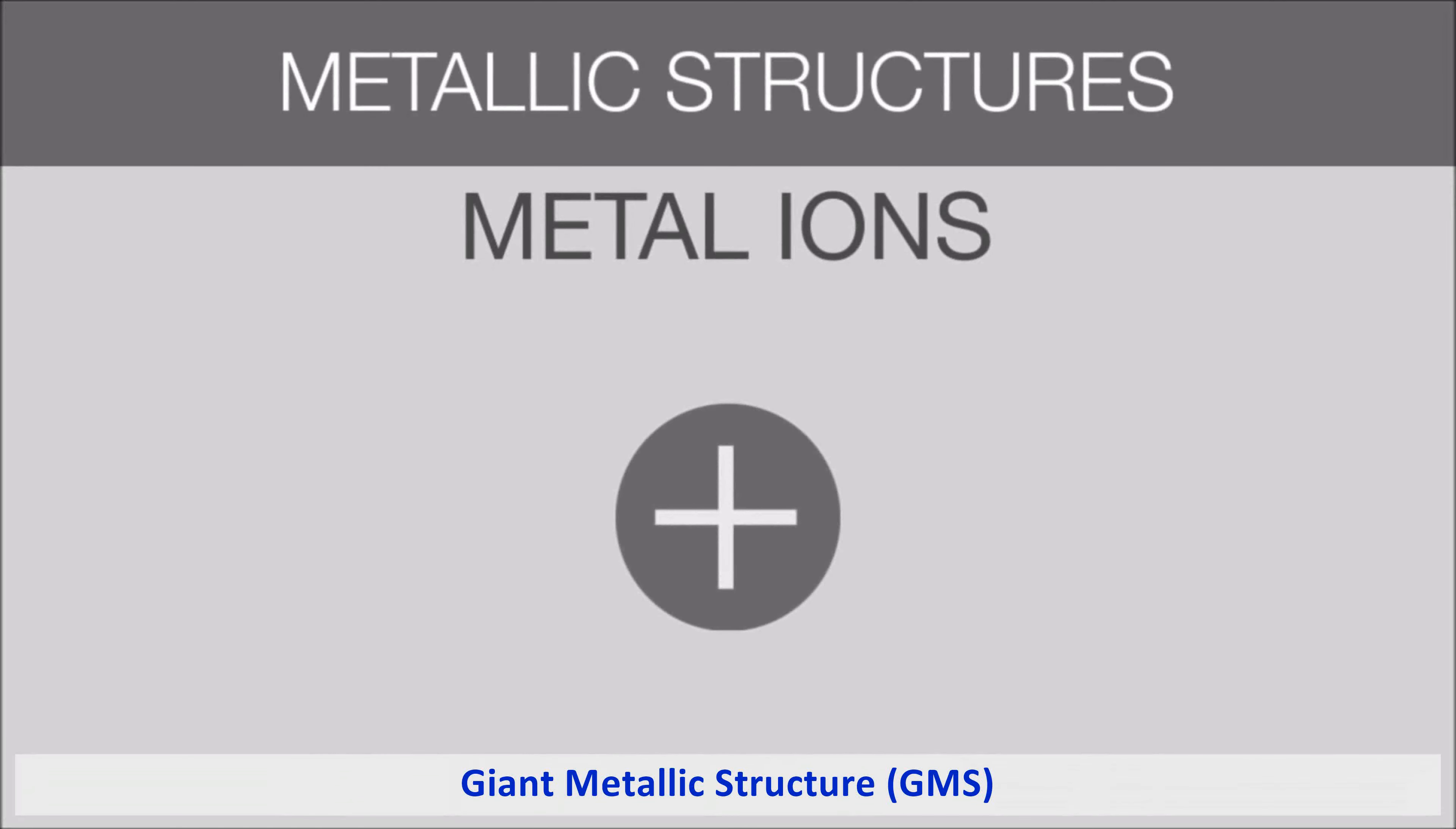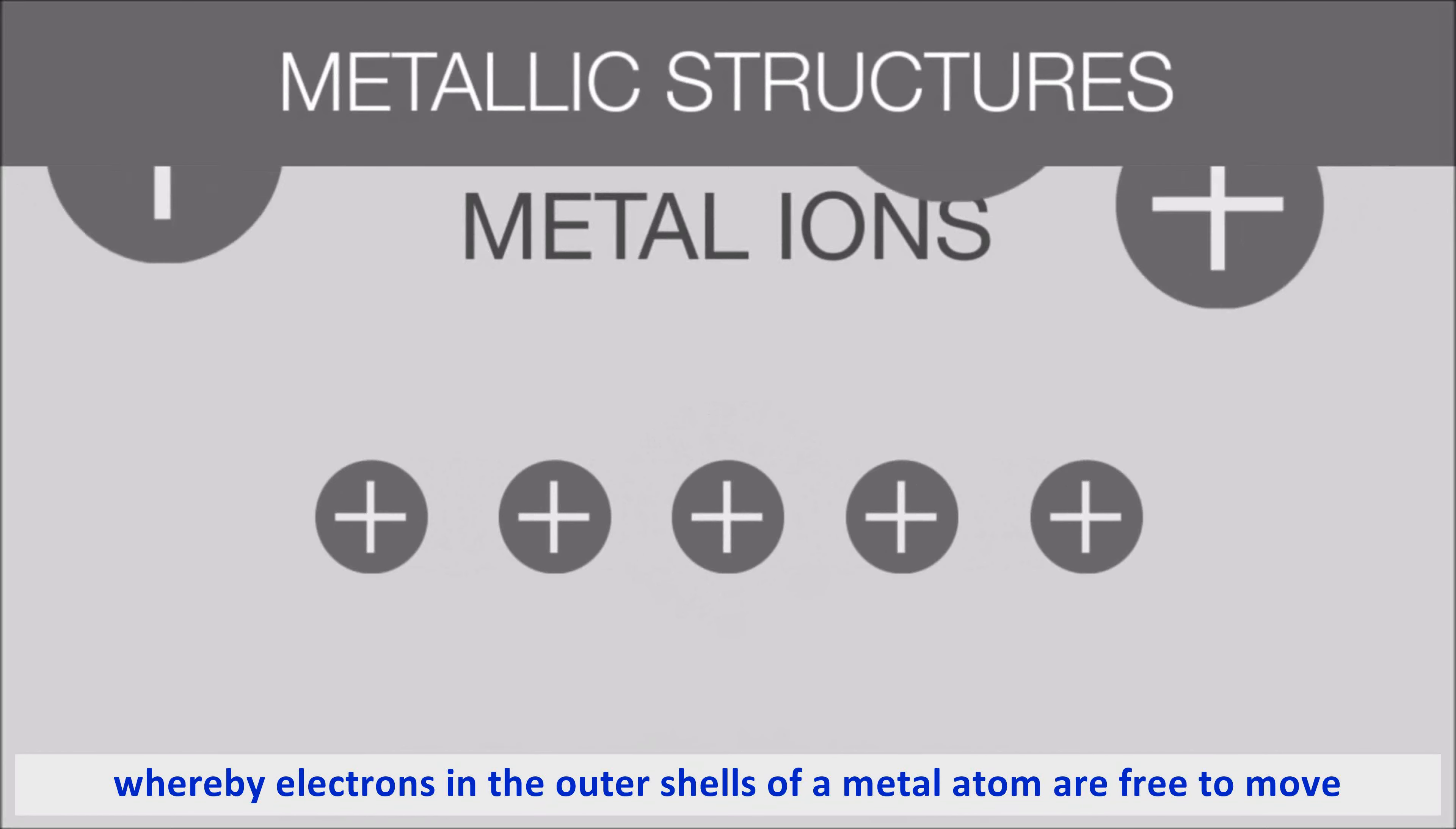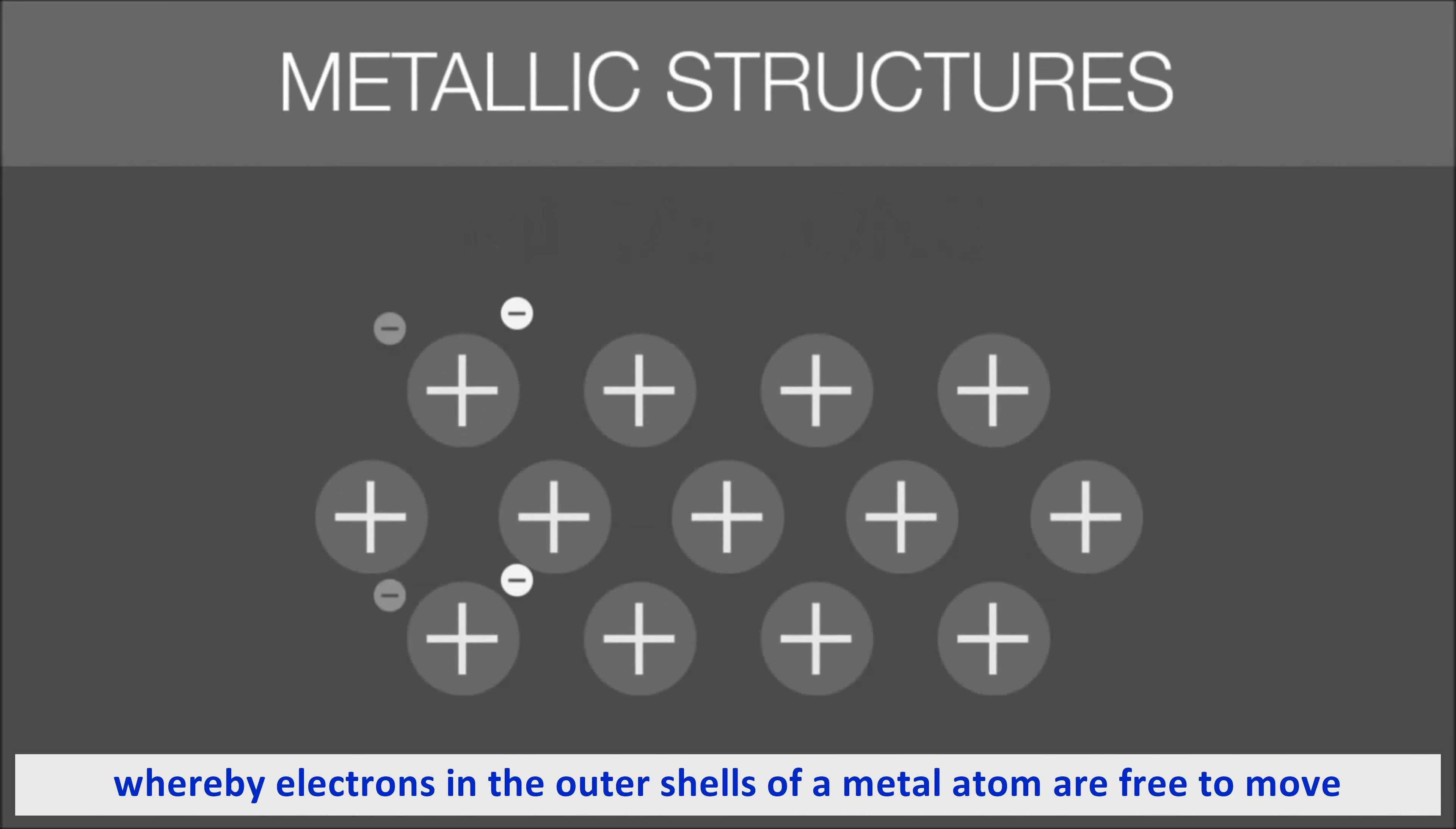The final giant structures we will consider in this video are metals. These all share the same structure, whereby electrons in the outer shells of the metal atoms are free to move.